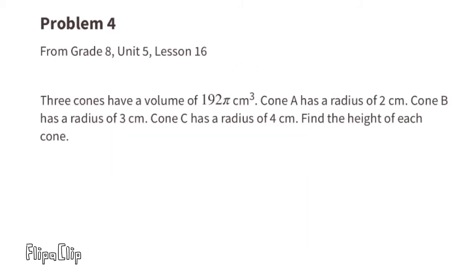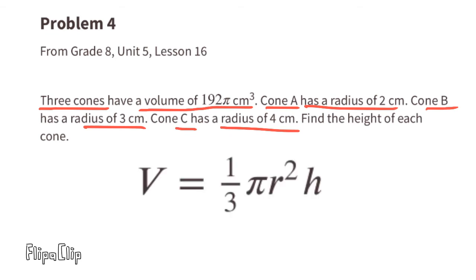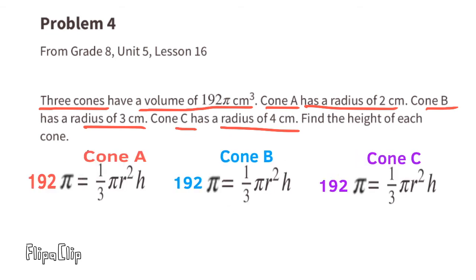Problem number 4 from 8th grade Unit 5, Lesson 16: three cones have a combined volume of 192 pi centimeters cubed. Cone A has a radius of 2 centimeters, Cone B has a radius of 3 centimeters, and Cone C has a radius of 4 centimeters. Find the height of each cone.